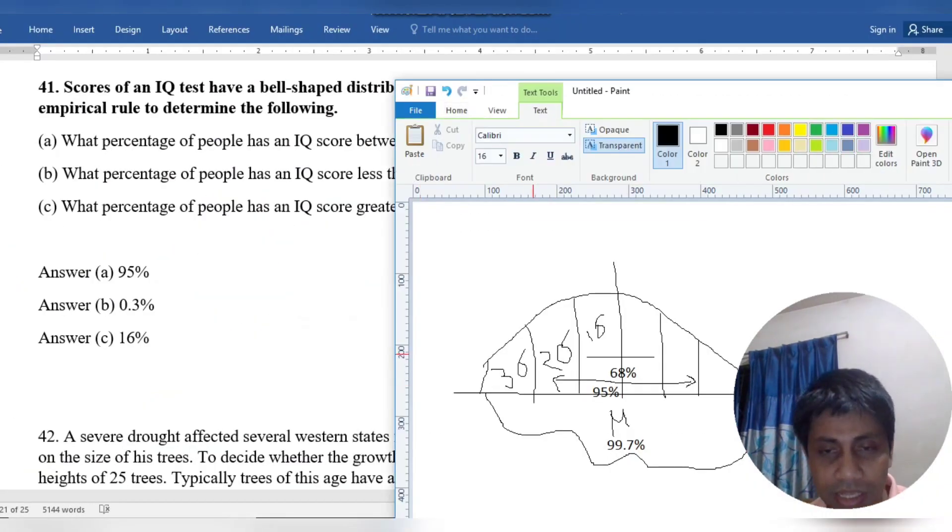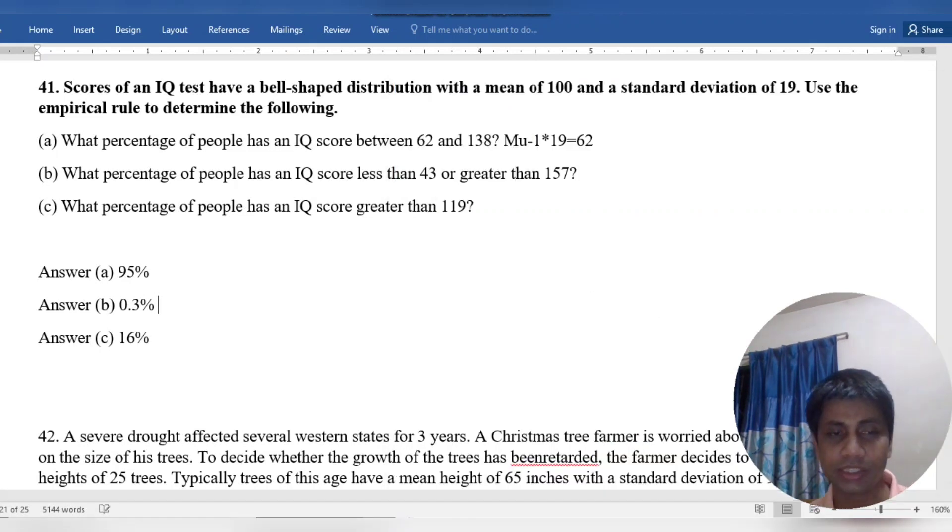So our result is less than 43 and greater than 157. This means this is out of the area. So 1 minus 99.7 percent, 1 minus the area is 1 minus 0.997 percent.